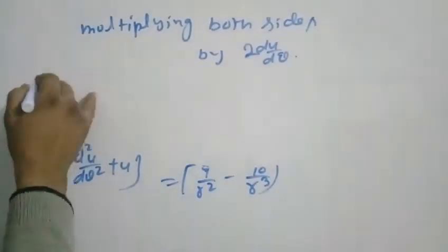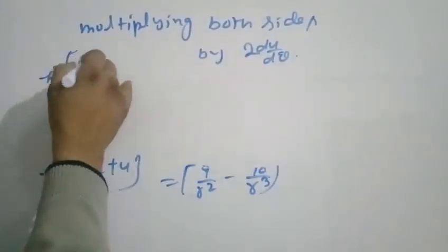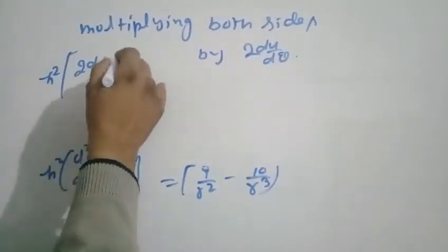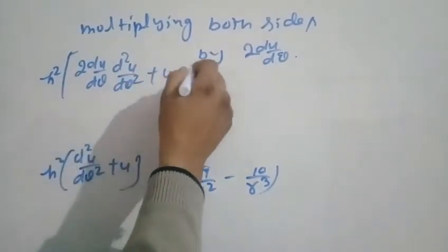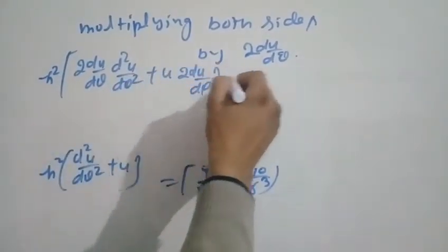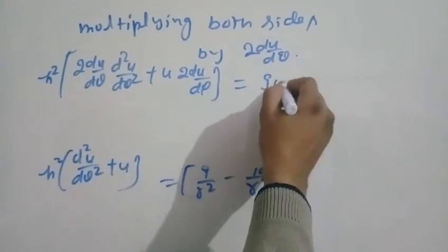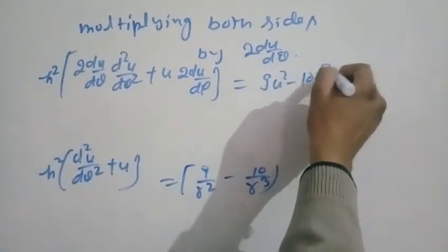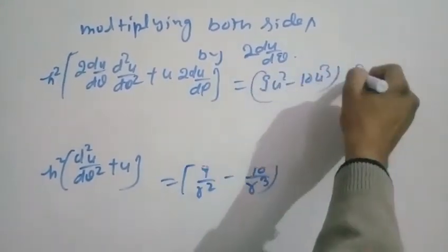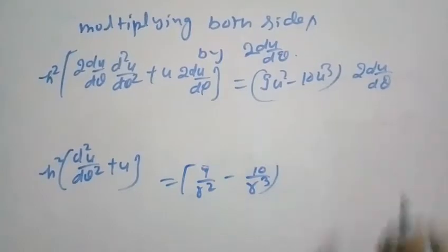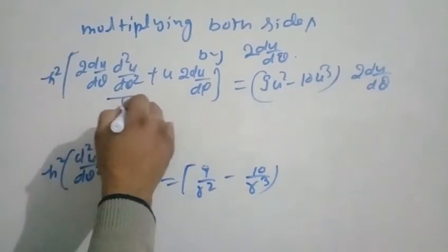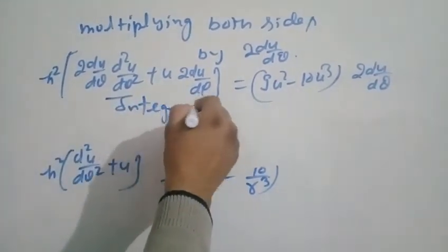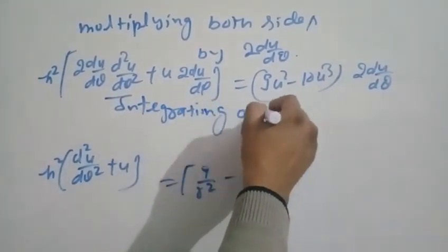Multiplying both sides by 2(du/dθ): h² (d²u/dθ²) plus u, multiplied by 2(du/dθ), equals (9u² minus 10u³) multiplied by 2(du/dθ). Now integrating on both sides.